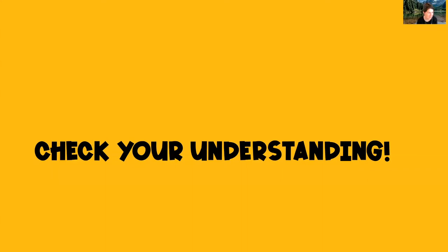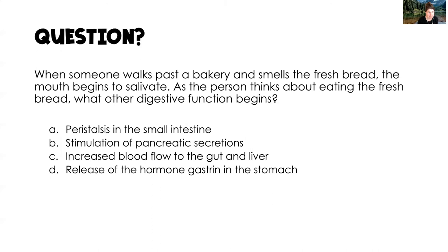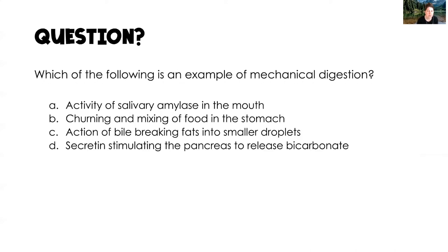Let's look at some practice questions. First: when someone walks past a bakery, smells fresh bread, and the mouth begins to salivate — as the person thinks about eating, what other digestive function begins? The answer is release of the hormone gastrin in the stomach. Peristalsis in the small intestine and pancreatic secretions haven't begun yet, but as soon as we smell something tasty, salivation starts and gastrin is released in the stomach.